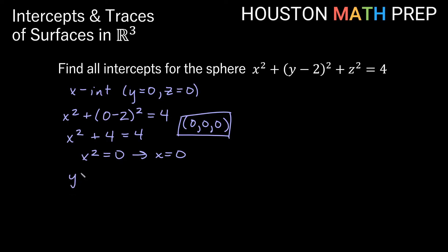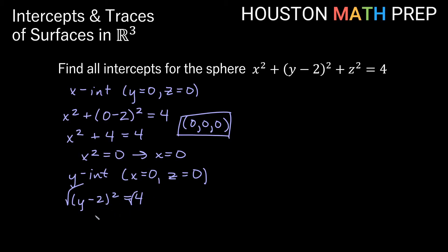So let's work through the y-intercept. When x is equal to 0 and z is equal to 0, x equals 0 zeros out the first term and z equals 0 zeros out the last term. So we're really just left with (y minus 2) squared is equal to 4. Square-rooting both sides — remembering the side that is not squared gets a plus-or-minus — we get y minus 2 is equal to plus or minus the square root of 4, which is 2. Adding 2 to both sides gives us y is equal to 2 plus or minus 2. So we have the two cases: 2 plus 2 gives y equals 4.